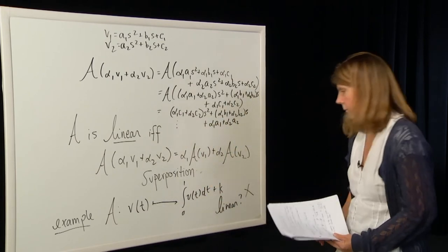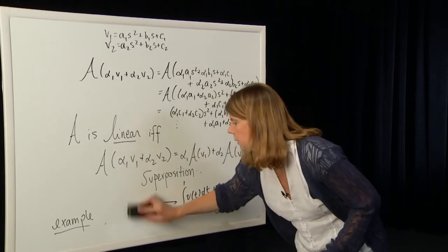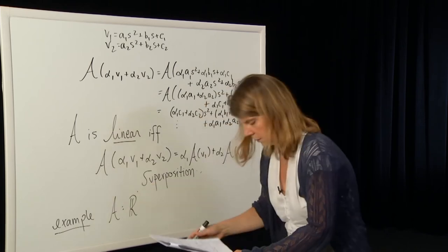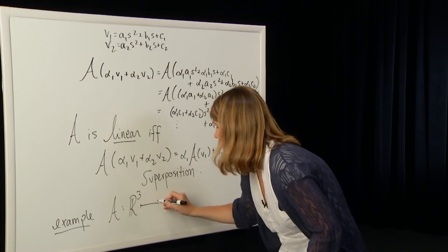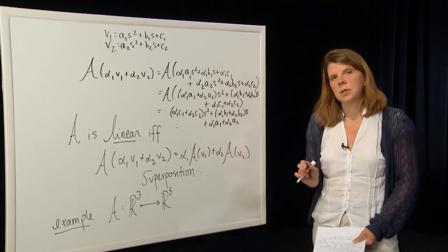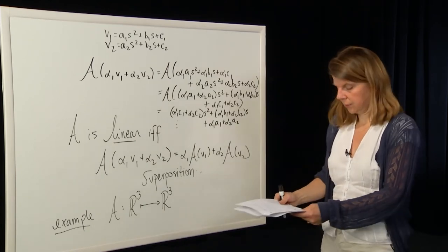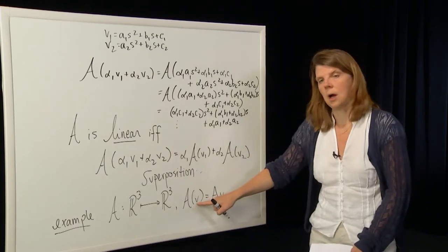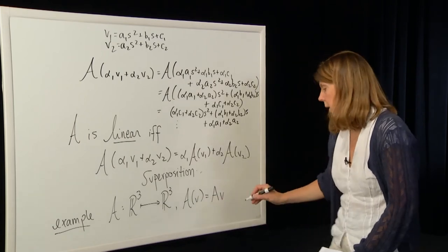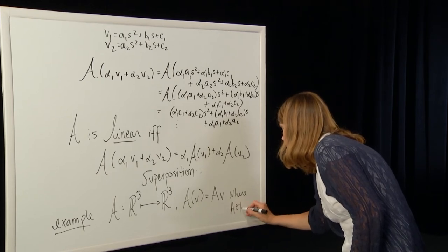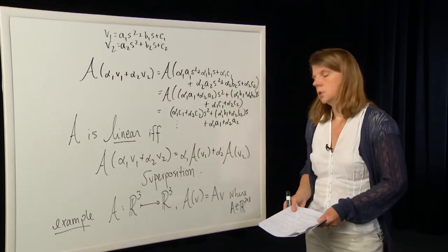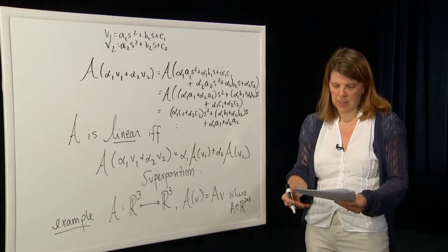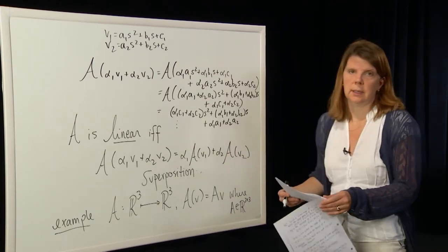One more example, which leads into what we'll do next. Suppose we look at a map A that takes vectors in ℝ³ and gives vectors in ℝ³, where the operation A is pre-multiplication of a vector by a 3×3 matrix. So A(v) is defined as a matrix A times the element v — this is matrix multiplication where A is in ℝ³ˣ³. Using the same superposition principle, it's easy to show this is a linear map as well.